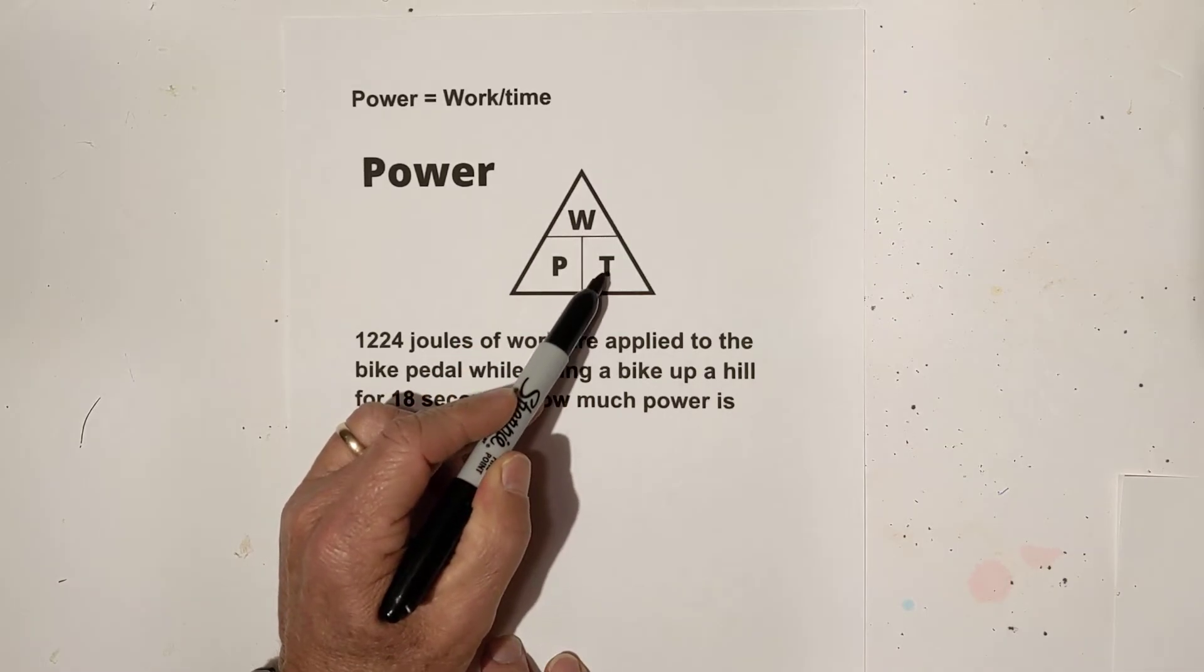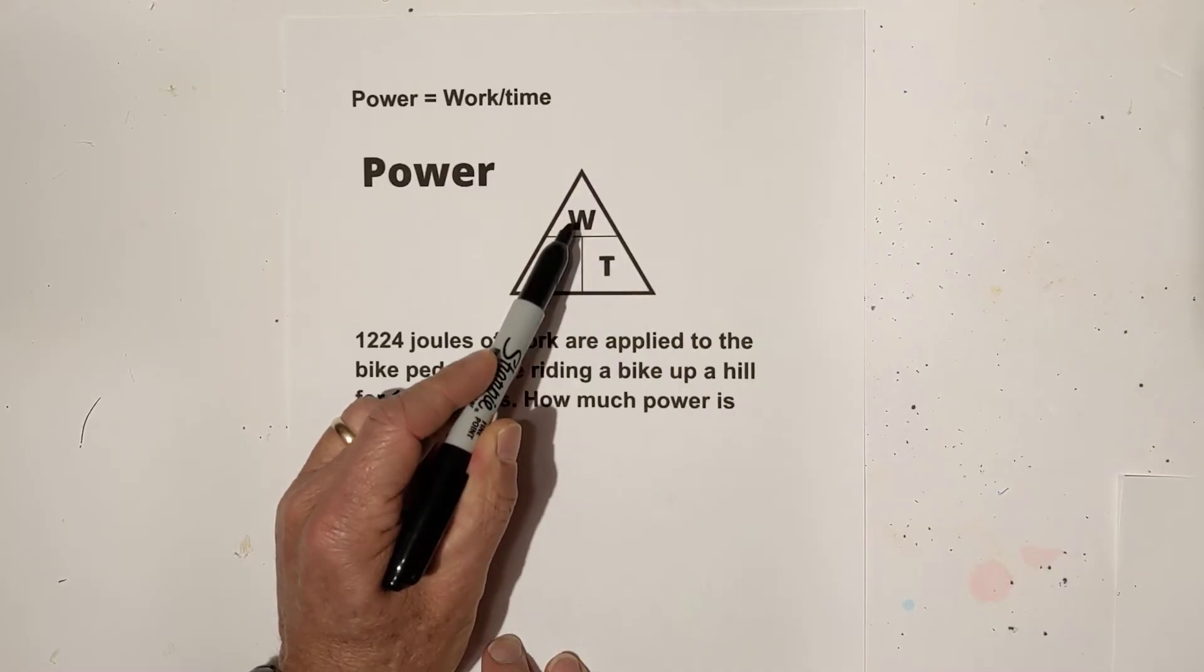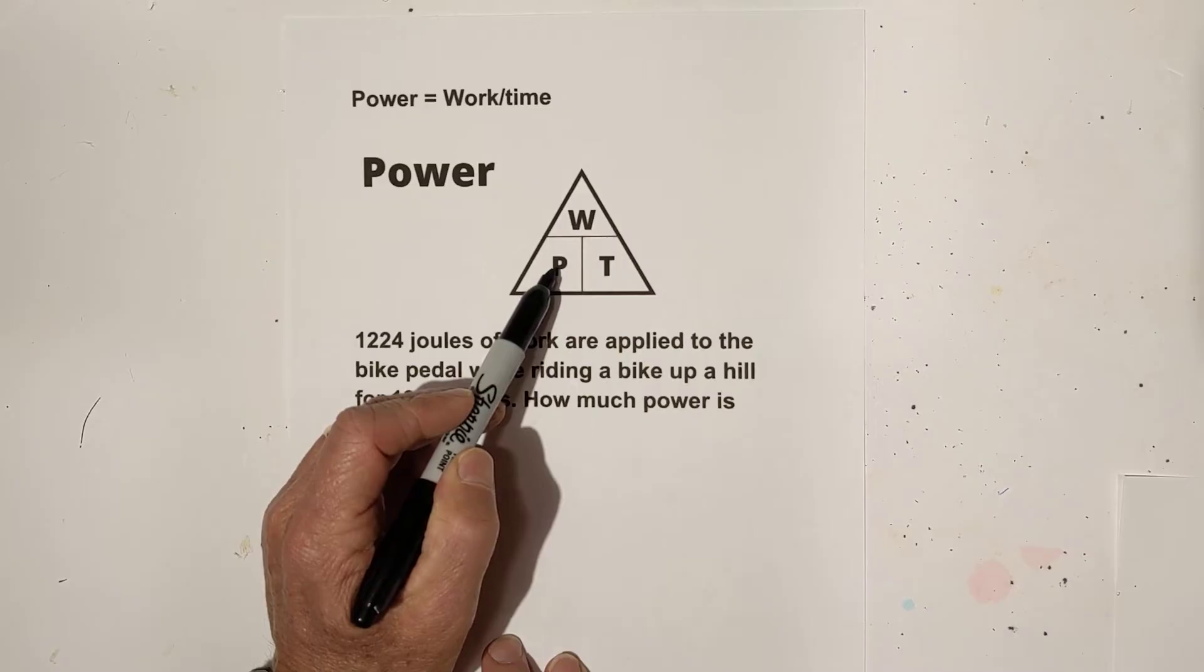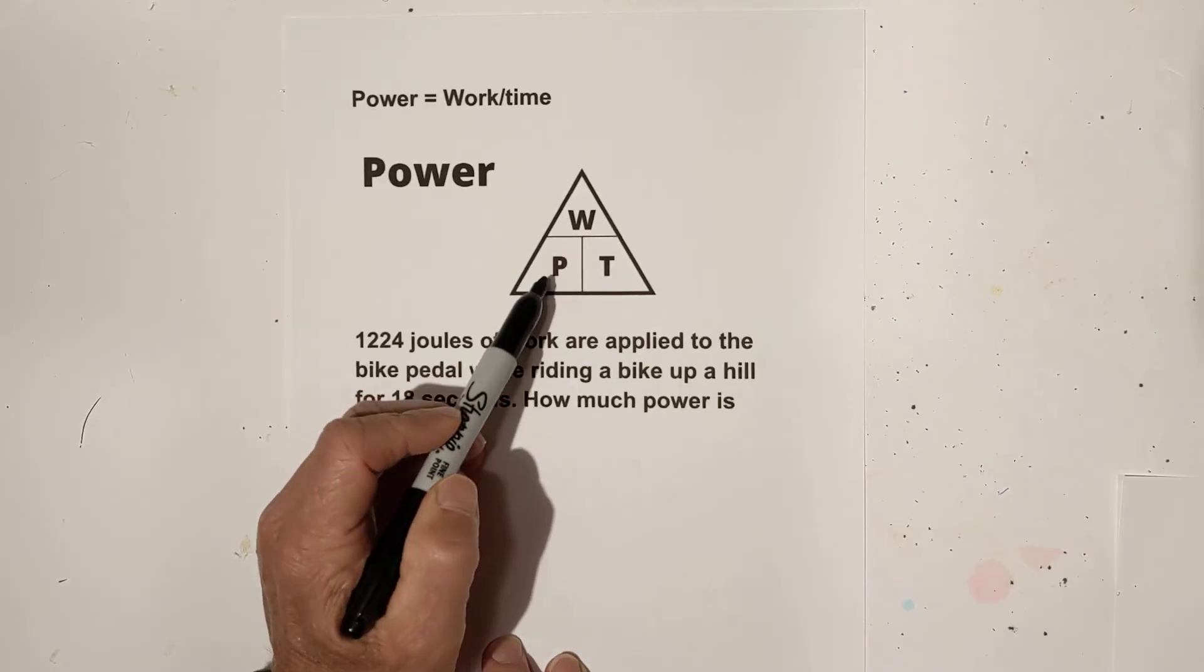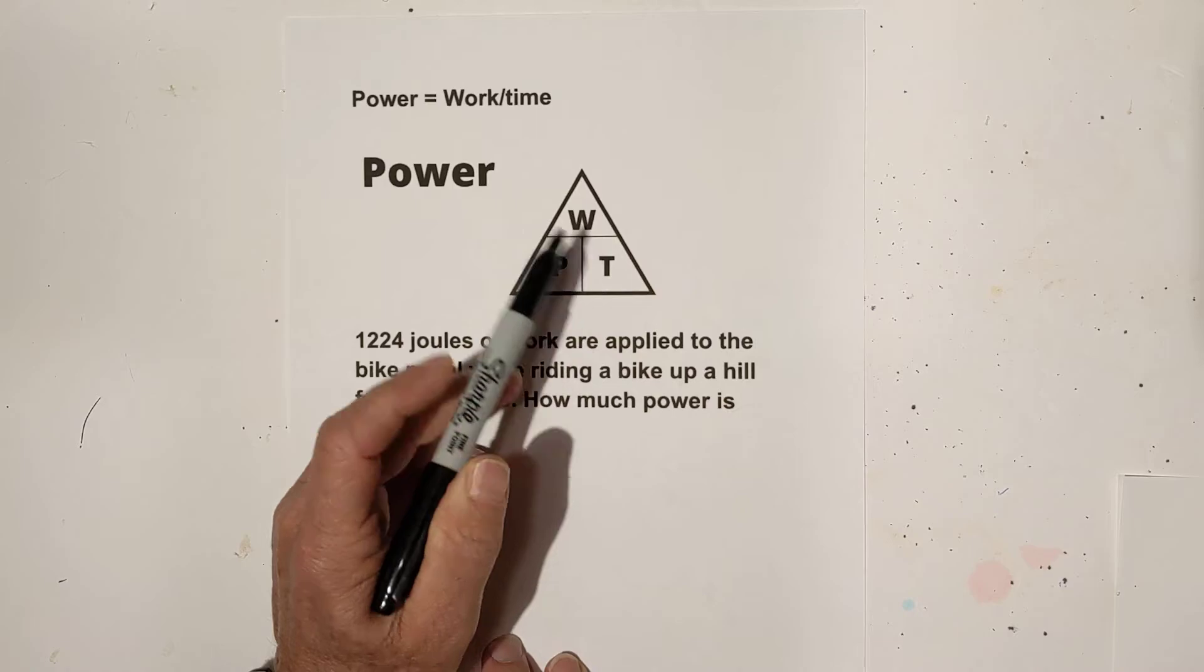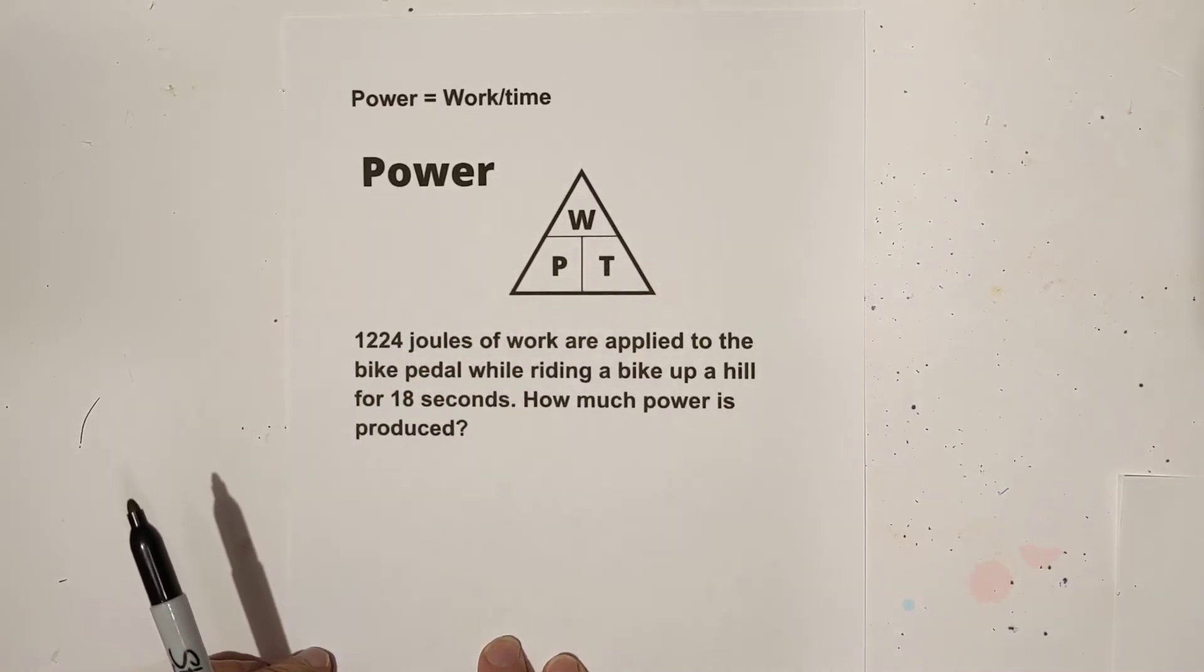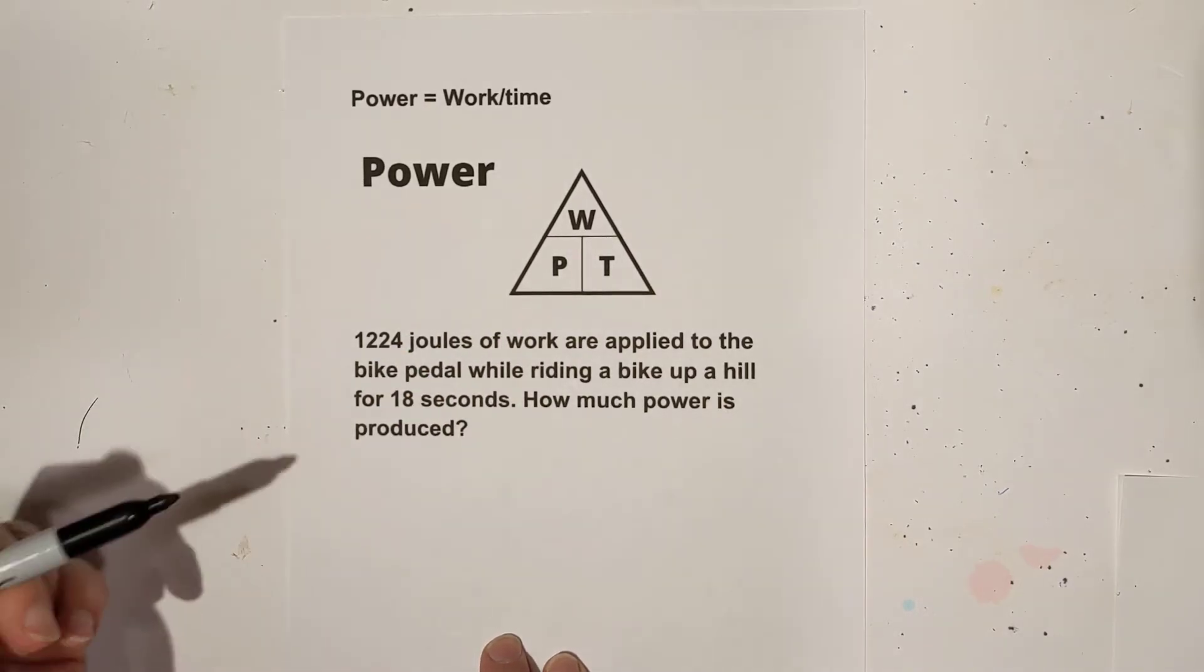If you need how long you need to apply something, it is work divided by power. And if you would like to know how much work is produced, it's power times time. I'll work an example of each of these. So let's get started.